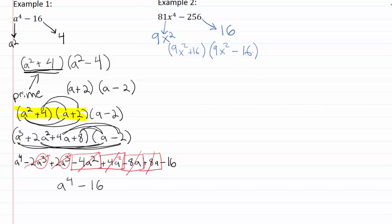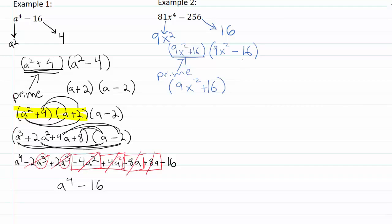We want to see whether we can break this down any farther. The first factor has a plus sign, so it's a sum of squares and it's prime. The second factor has a minus sign, so it's a difference of squares and we can keep breaking it down. The prime factor stays out in front.